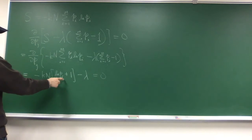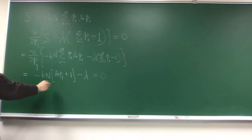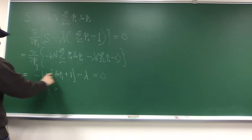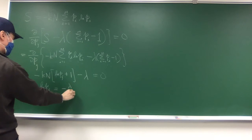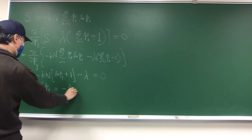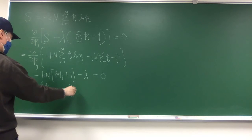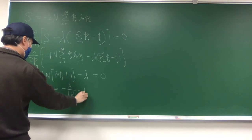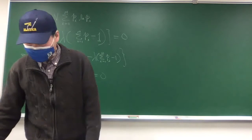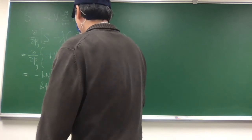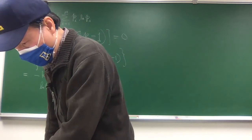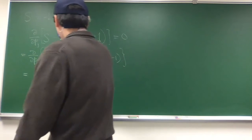Obviously, we solve for p sub j, so log of p sub j is equal to, put this to get minus lambda divided by kn, and minus one.